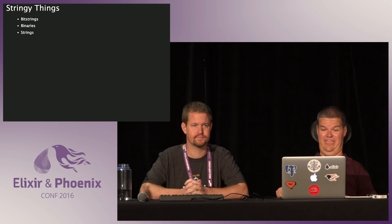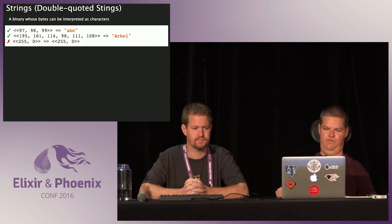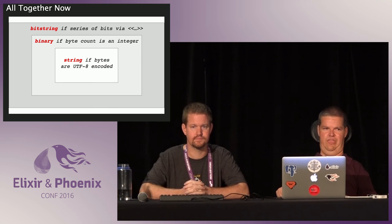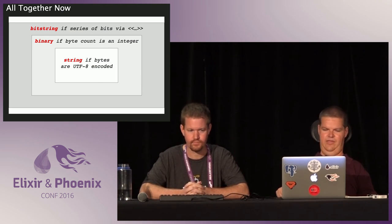Now to the double-quoted stringy type things, of which there are three. A bit string is just a sequence of ones and zeros between double angle brackets. Binaries are bit strings that happen to be in 8-bit or byte chunks. If your binary's bytes happen to represent UTF-8 code points, then you can refer to it as a string — this is Elixir's double-quoted string, the normal string. So these are subsets of each other: bit strings is everything, binaries are when the length is evenly divisible by 8, and strings are UTF-8 encoded binaries.